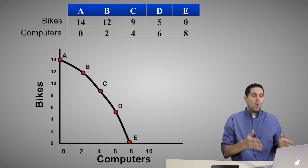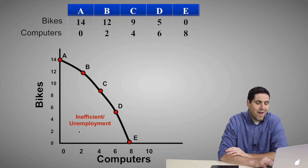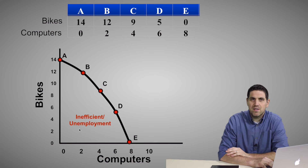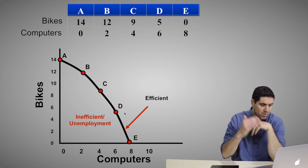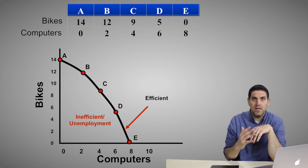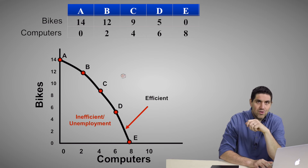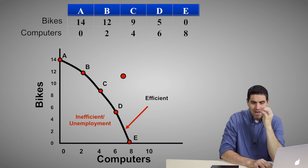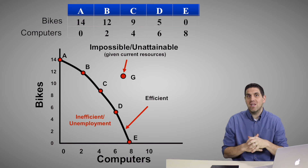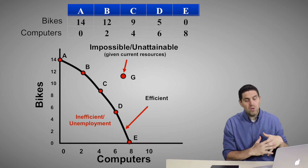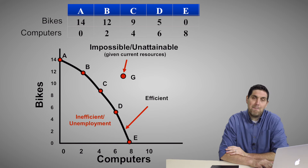Each point on the curve represents a specific combination of the two goods we can produce at full employment using all of our resources. Any point inside the curve represents inefficiency — if we're producing only two computers and two bikes, we're being inefficient. A point on the curve means we're producing efficiently, using all our factors of production. And outside the curve, you can't produce that quantity — there's just not enough resources. With better technology, we could produce out there in the future, but right now we cannot produce at point G.